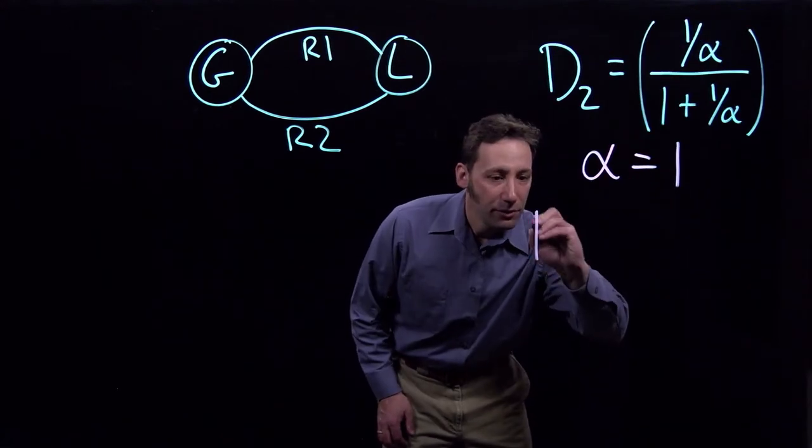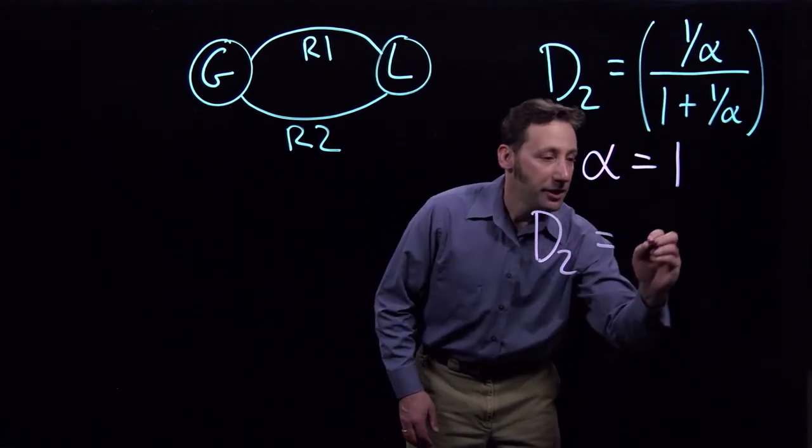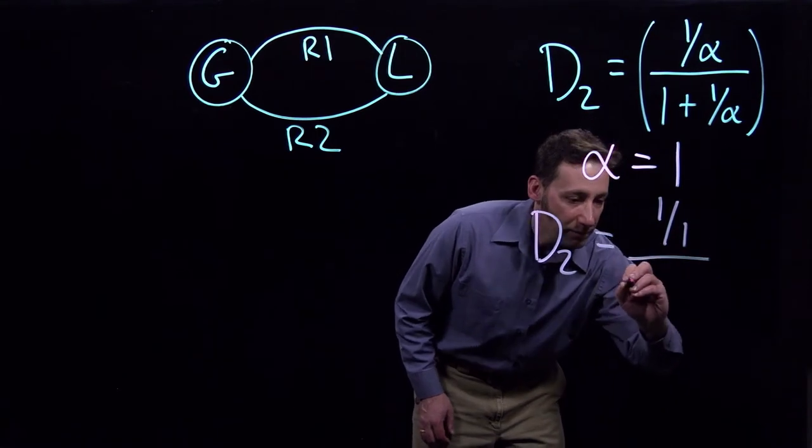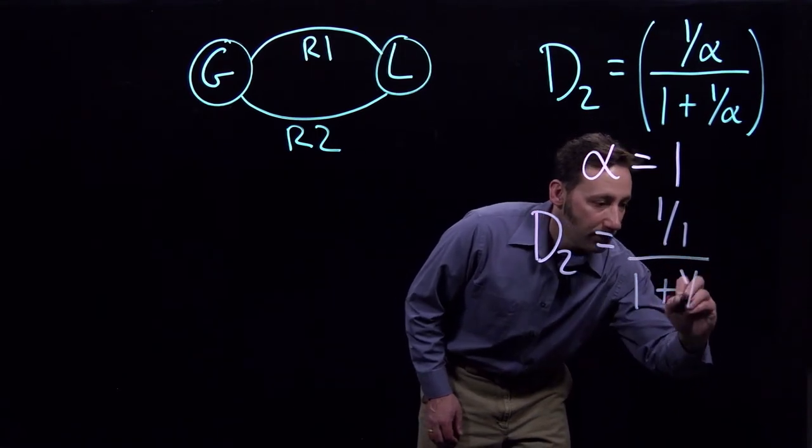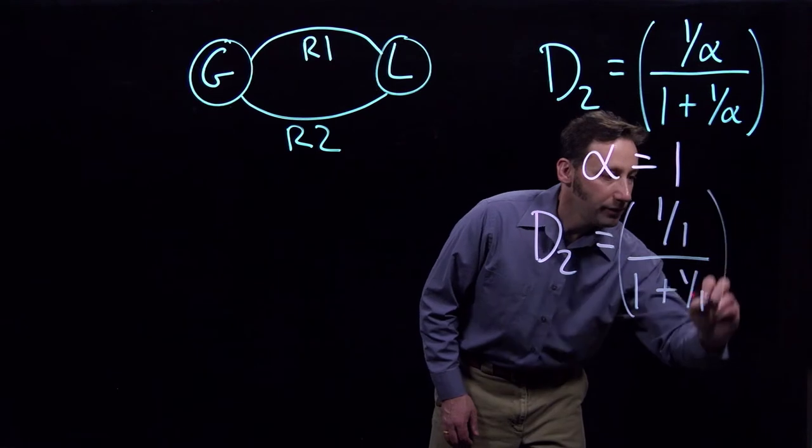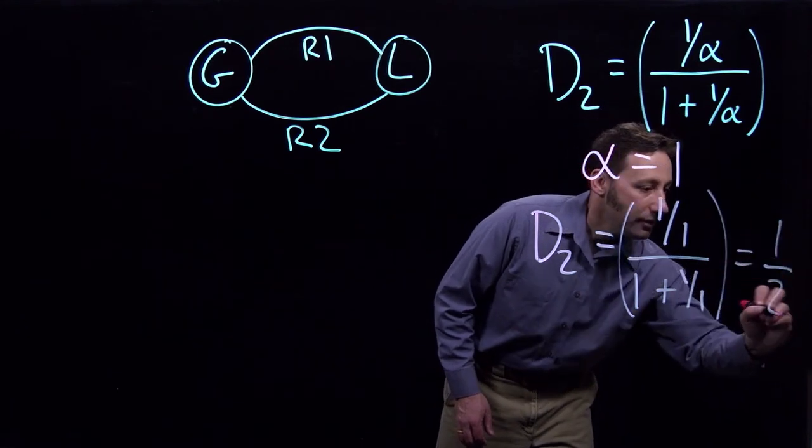So D2 is going to be equal to 1 over 1 divided by 1 plus 1 over 1, which is 1 half.